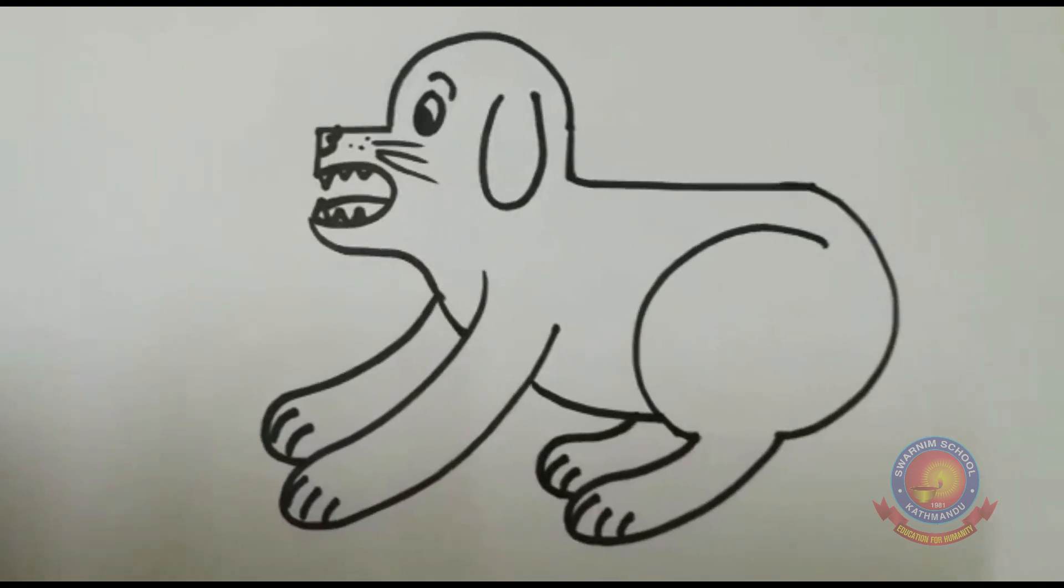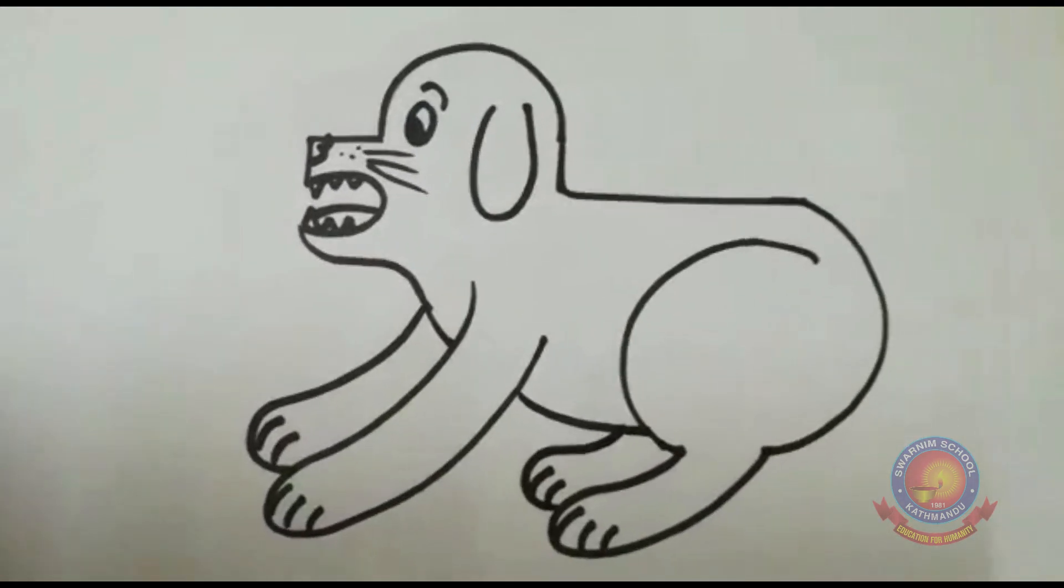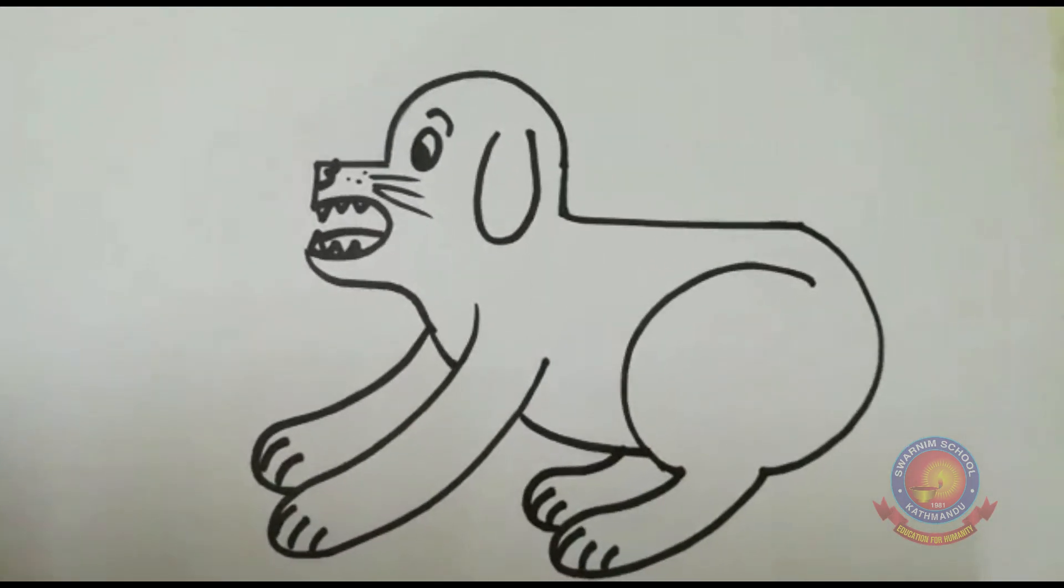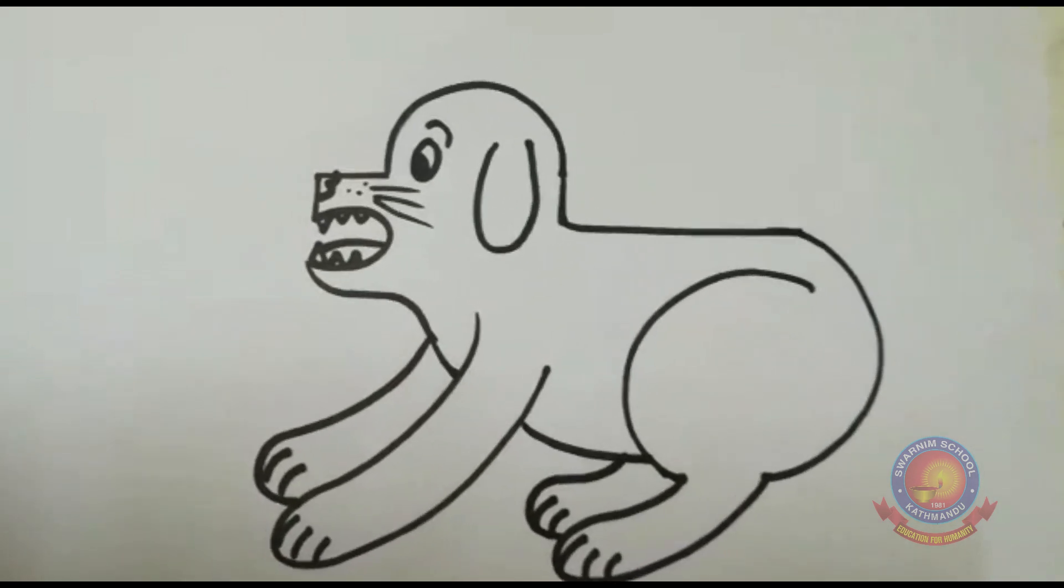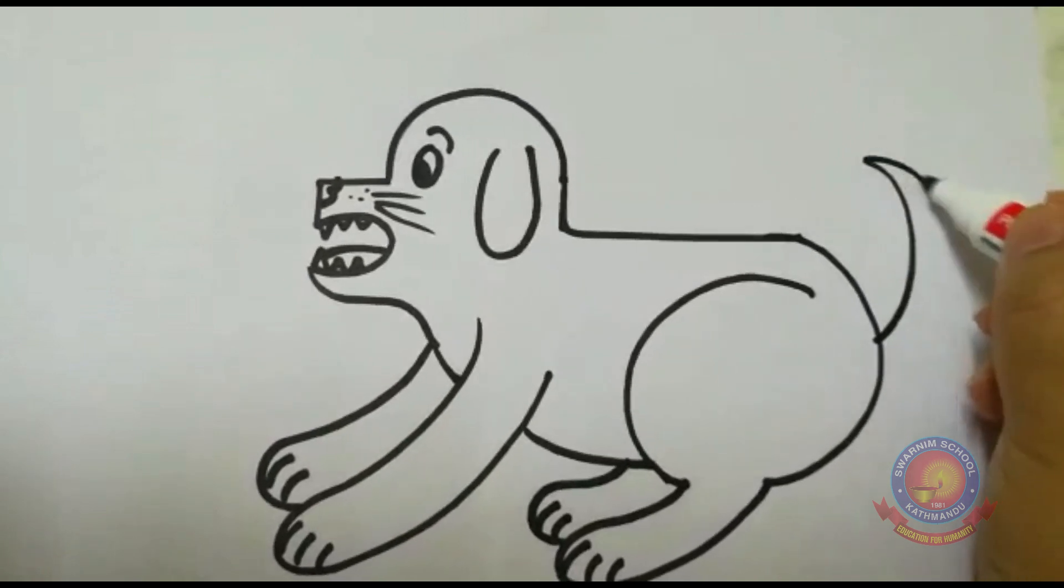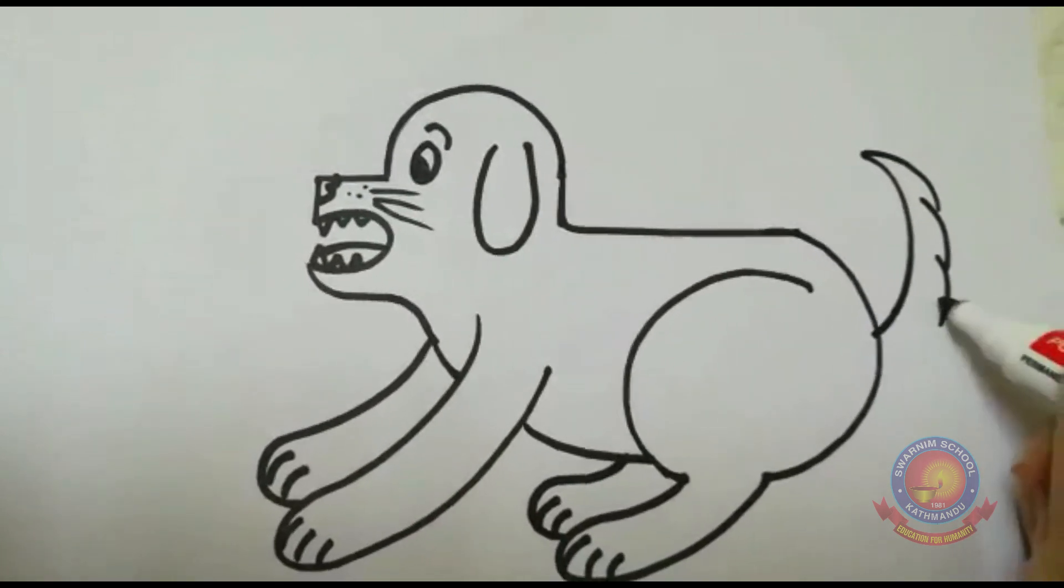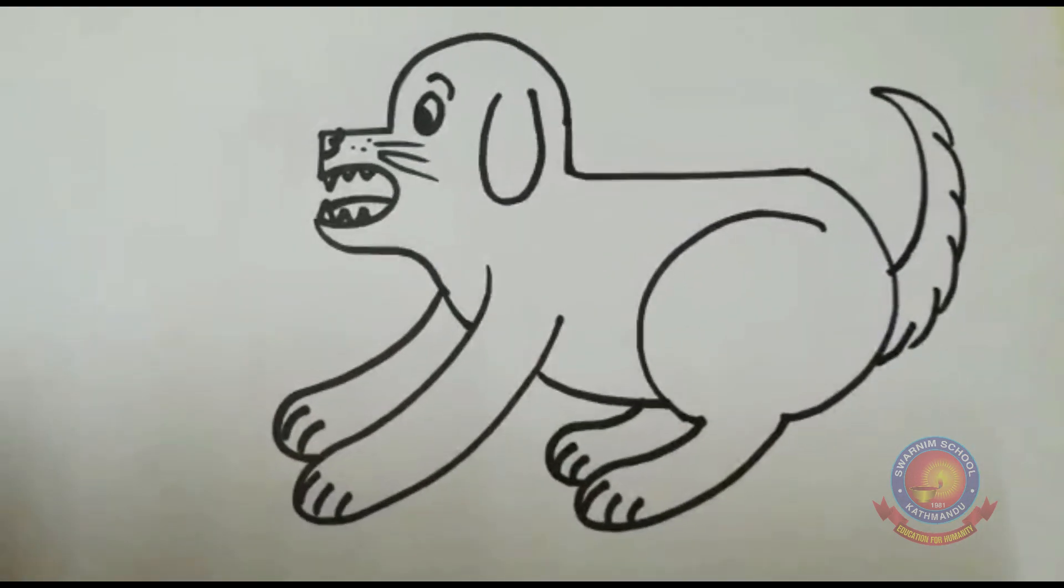So when you make tail, you can make any side. Any side you can make. I'm gonna make it up. Because this dog is angry, so let's make up. Make curved line and some lines like this. Our angry dog is ready.